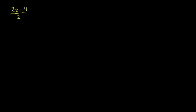We already know how to simplify this — we've done this in the past. We could divide the numerator and the denominator by 2. This would be equal to x plus 2. If you divide 2x by 2, it becomes x. You divide the 4 by 2, it becomes 2. And if you divide the 2 by 2, you get 1. So this is equal to x plus 2, which is pretty straightforward.